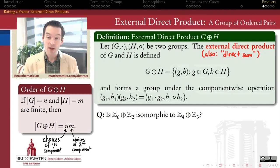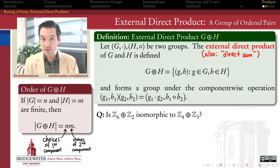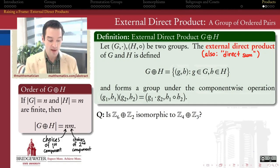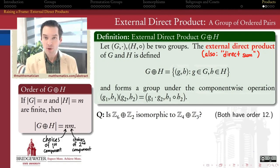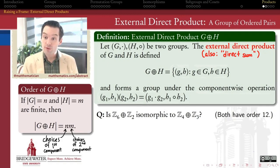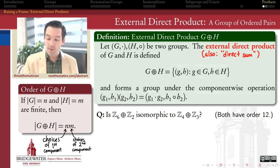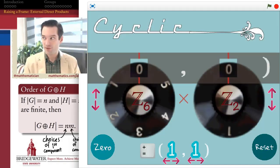That's still an anatomy lesson — it tells us what these pieces look like. But we want a physiology lesson: we want to understand how these pieces interact to make structure inside the larger direct product group. This requires asking: is Z6 ⊕ Z2 isomorphic to Z4 ⊕ Z3? Both groups have order 12 (6×2 = 12, 4×3 = 12), so they have the same number of elements. What can we say about whether these groups are isomorphic?